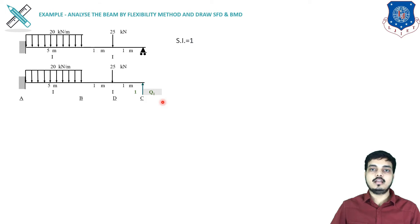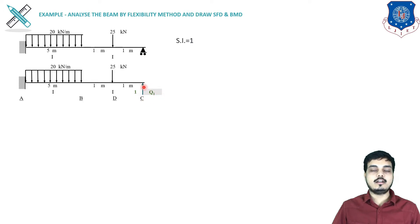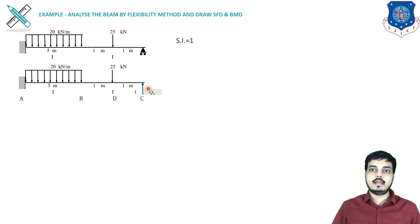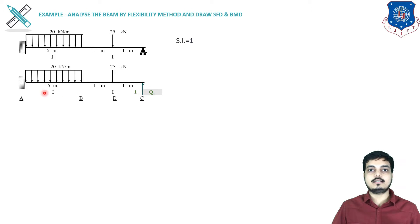We will release our structure, making it statically determinate (SI = 0). I have released the support at C and placed the redundant as Q1 as a reaction there. The fixed support and loading remain as they are — I have simply removed the support at C and placed the redundant over there. We now need to find this redundant, and from it we can find the reaction at A, the moment at A, and later draw the diagrams.